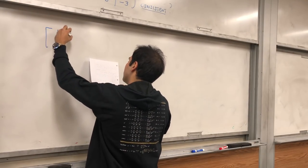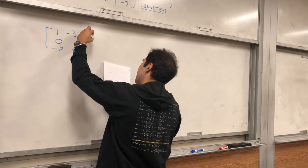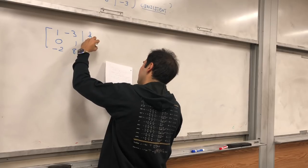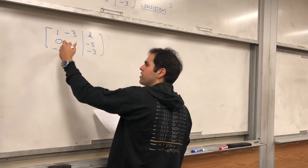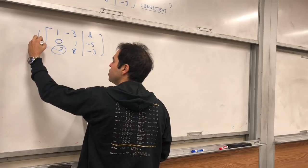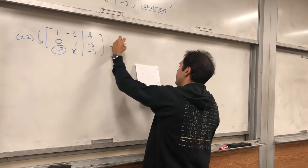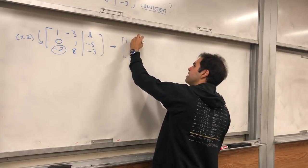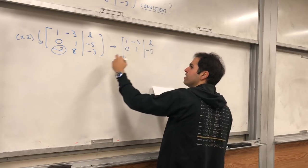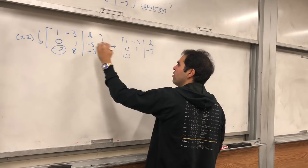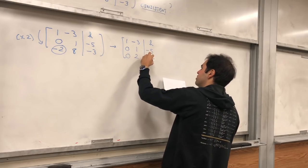Alright, so let's see, [1, -3; 0, 1; -2, 8] and then [h, -5, -3]. So first of all, let's try to eliminate this -2. So let's add 2 times the first row to this row, and we get [1, -3, h; 0, 1, -5] and then [0, 2, 2h - 3].